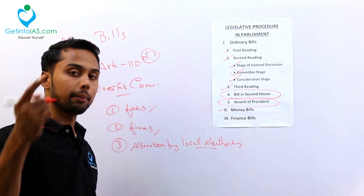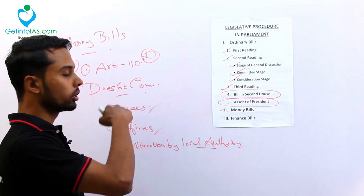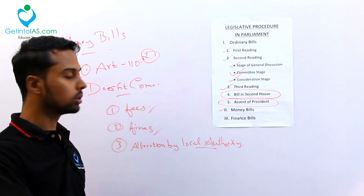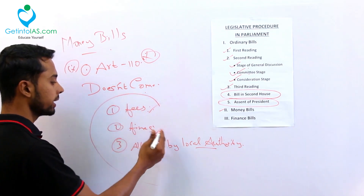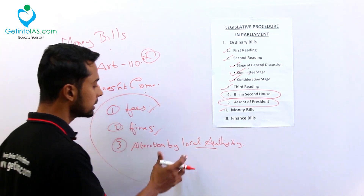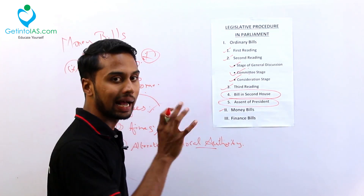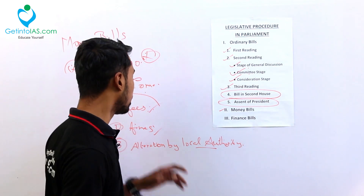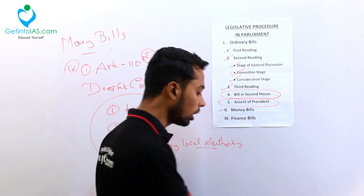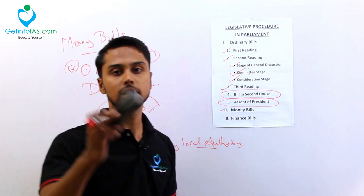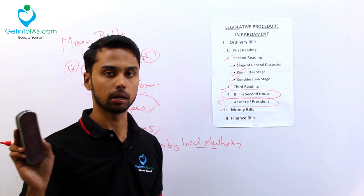Which items come under money bill is present in your book - nine grounds. Fees, fines, and any alteration of tax by local authority will not fit into the definition of money bill. That is important.